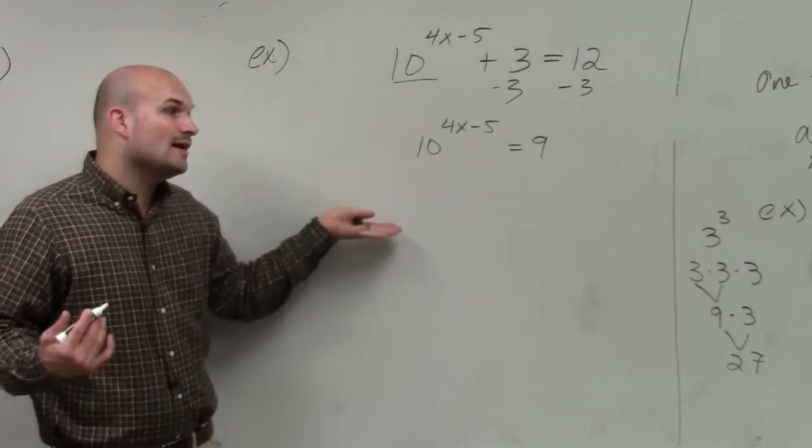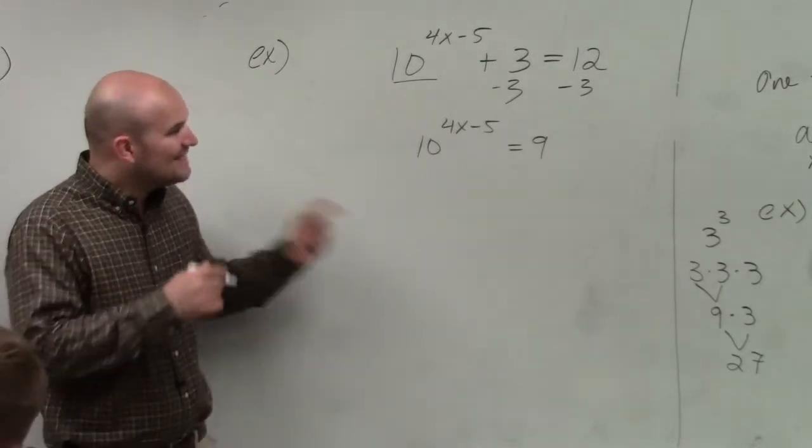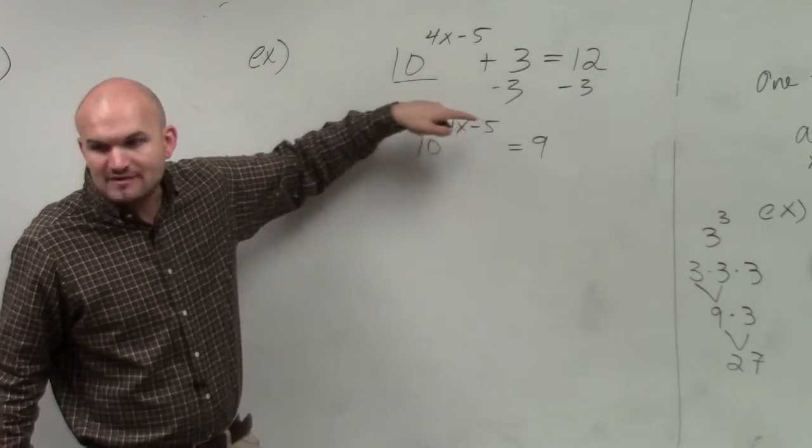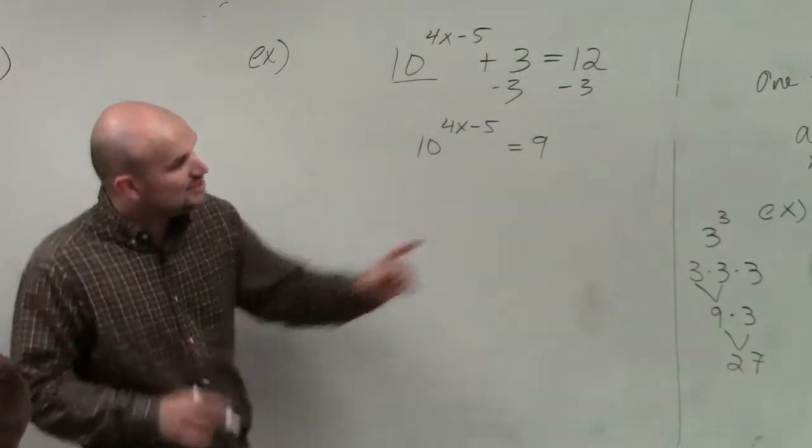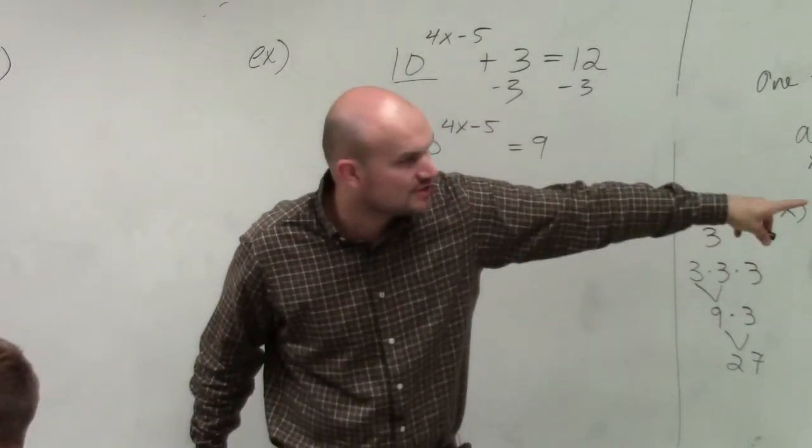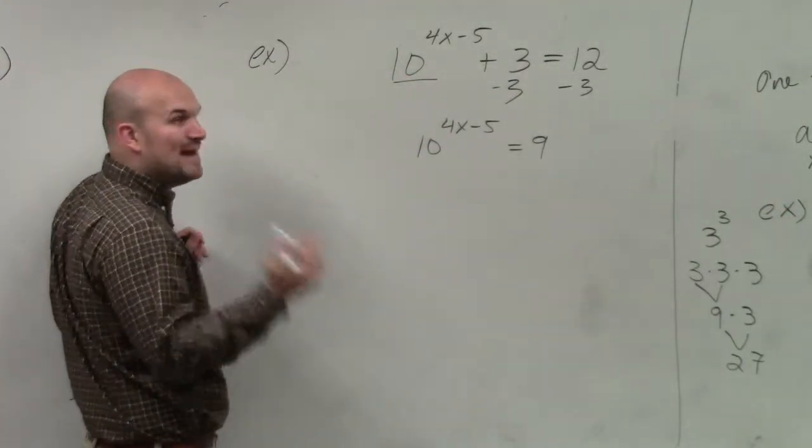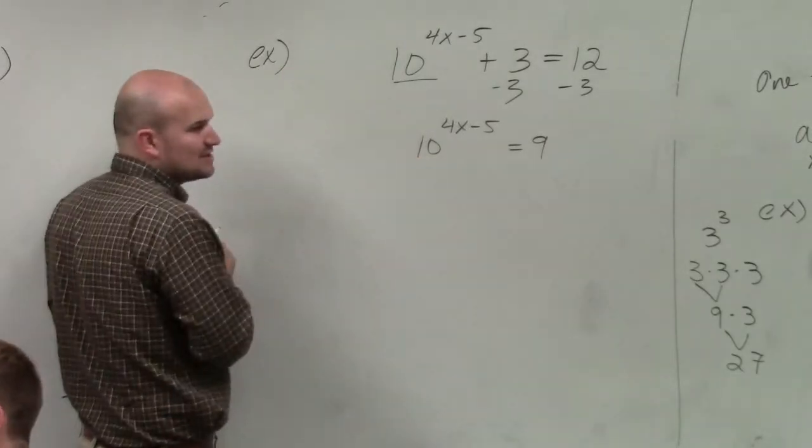So therefore, if I can't use the one-to-one property, then I need to get my x off as being a power. So the only way to do that is to use my rules of logarithms. What I'm going to have to do is take the logarithm of the same base as the base of my exponent.